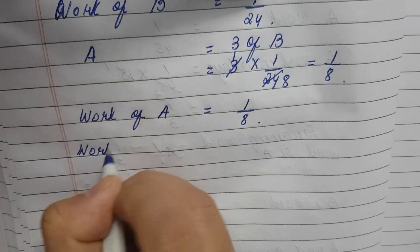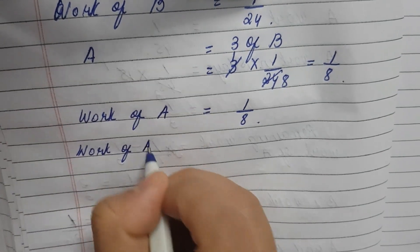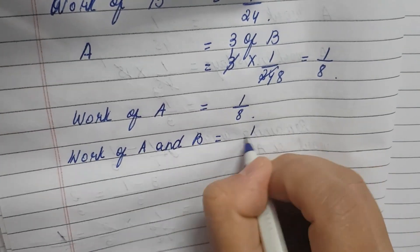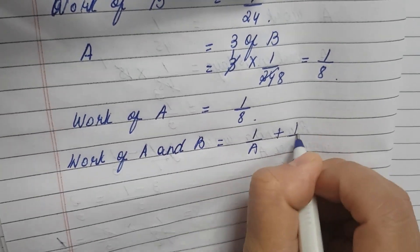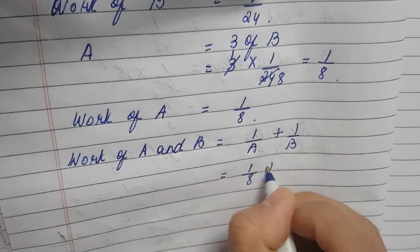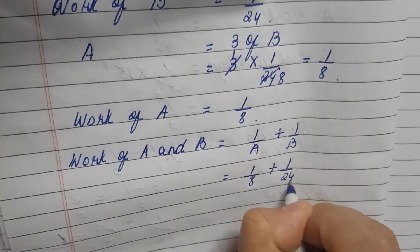Work of A and B is equal to 1 by A plus 1 by B. 1 by A is 1 by 8 plus 1 by B is 1 by 24.